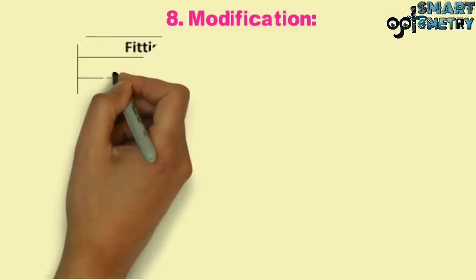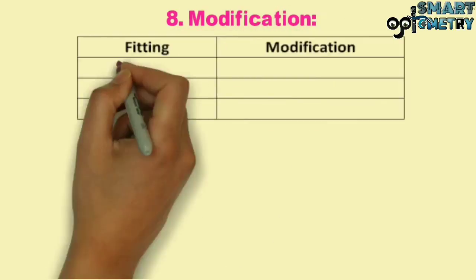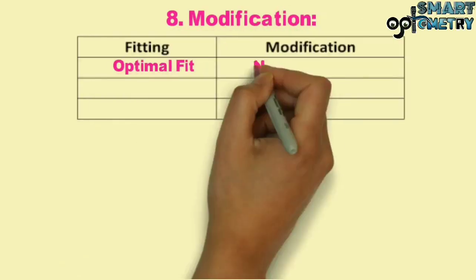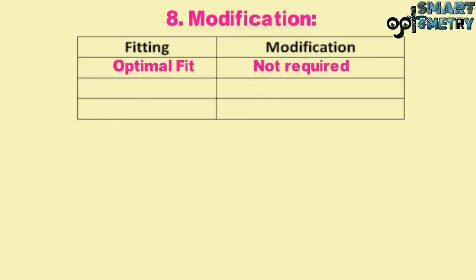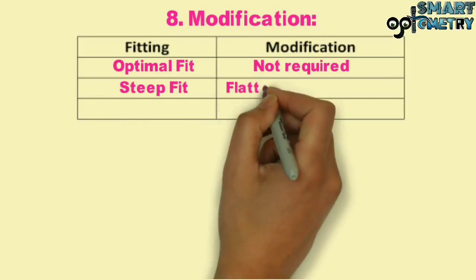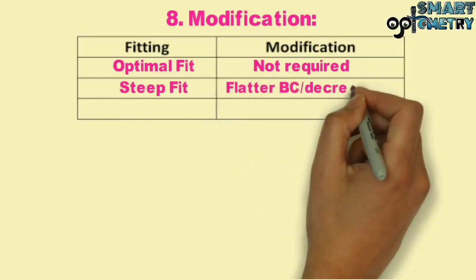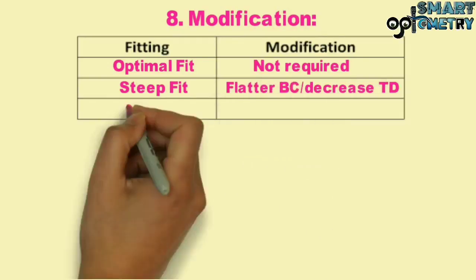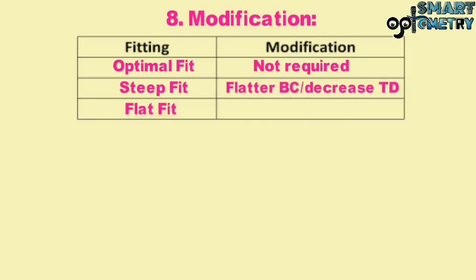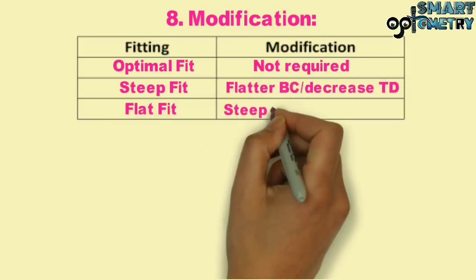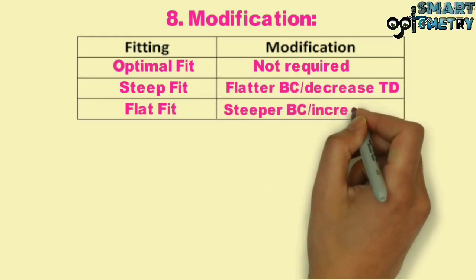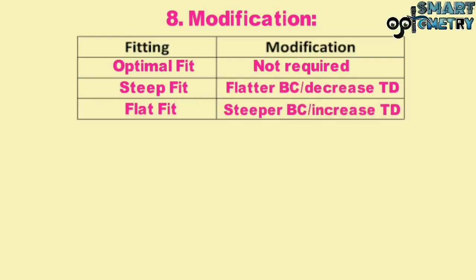8) Modification: In an optimal fit, modification is not required. In a steep fit, we need a flatter base curve or decreased total diameter. In a flat fit, we need a steeper base curve or increased total diameter.